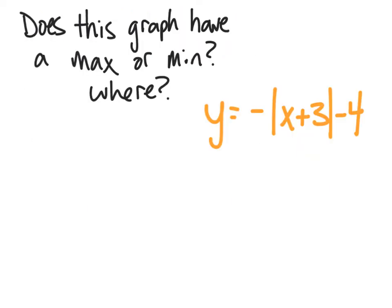Let's think about this graph. Will this have a maximum or a minimum? And then let's think about where. From transformations, we know that a negative on the outside here, this is a reflection over the x-axis. So we know that this graph is facing down.